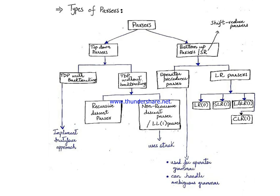Moving to the bottom-up parser, also known as SR parsers, it is further categorized into operator precedence parsers and LR parsers. The operator precedence parser is a special type designed for operator grammar. Notably, operator precedence parsers can handle ambiguous grammar as well, unlike most other parsers which cannot work with ambiguous grammar.